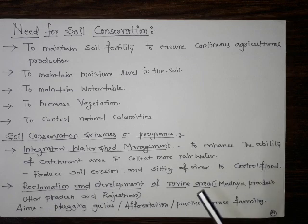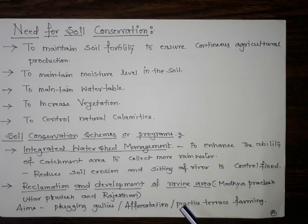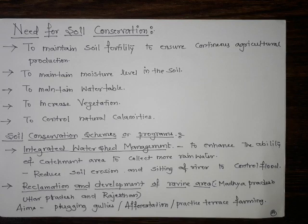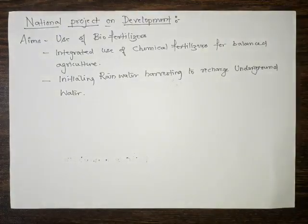Floods can be controlled if rivers are not allowed to silt. Reclamation and development of ravine areas is another objective — ravine areas are places subjected to gully erosion, particularly in Chambal valley, Madhya Pradesh, Uttar Pradesh, and Rajasthan. The aim is to control gully erosion by plugging gullies, afforestation, and practicing terrace farming.